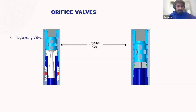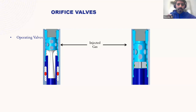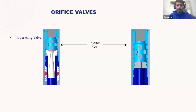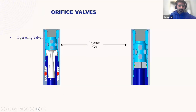Orifice valves are the simplest components of the gas lift system. You have your IPO valves at the upper stations, and the deepest station has the orifice valve — it has a small port drilled into the seat ranging from one-eighth inch up to three-eighths inch depending on how much gas you are injecting. It acts as a controlling feature, and the port can have a simple drilled profile or a venturi-type profile in the valve.